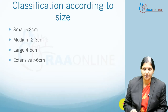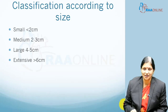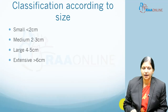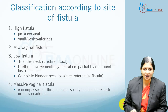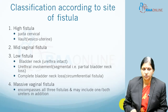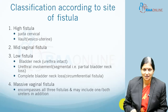Classification according to size: fistulas can be small (less than 2 cm), medium (2 to 3 cm), large (4 to 5 cm), and extensive (more than 6 cm) in diameter. According to site, we differentiate them as high fistulas, mid fistulas, and low fistulas. High fistulas can be juxta-cervical or bald vesico-uterine fistulas.